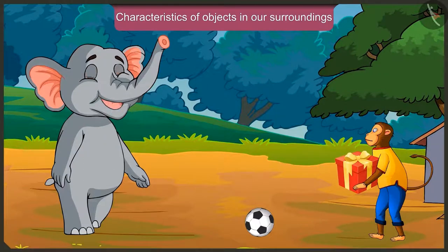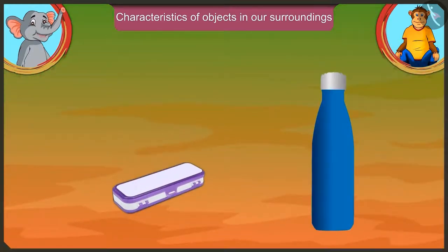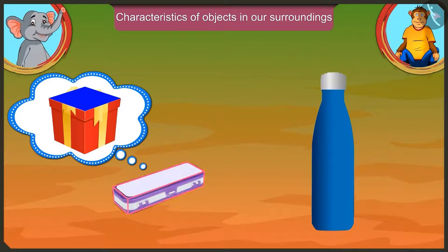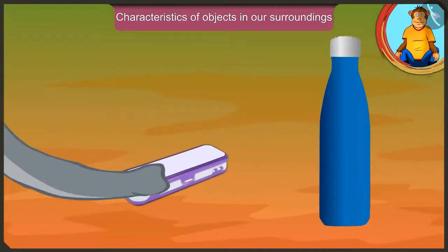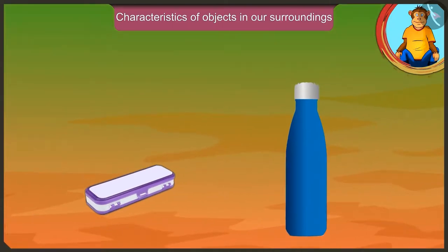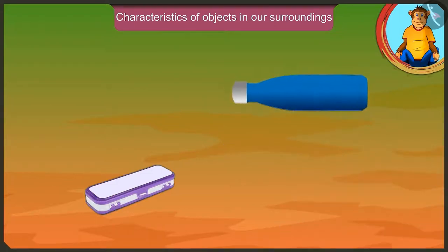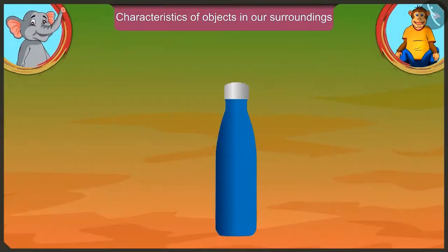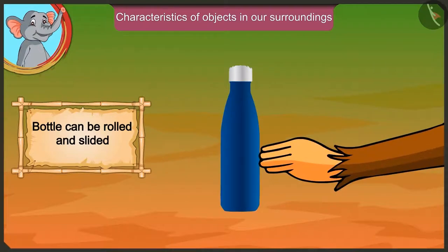Jaggu, what gift did you get for Golu? I have got this pencil box and a water bottle for him. This pencil box also has a flat surface just like your box, so you can slide and move it. And this bottle can be rolled like this. We can roll this bottle and also slide and move it.